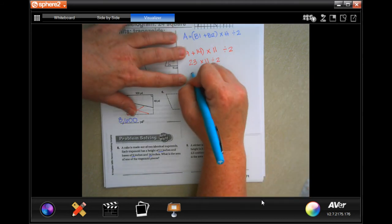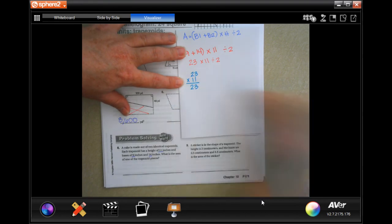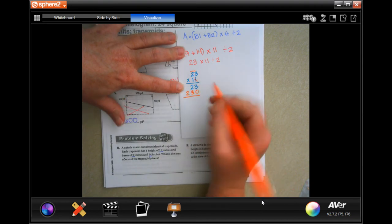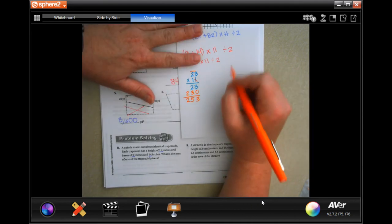Times 11 divided by 2. So 23 times 11, well, 1 times 23 is 23. We do tick, tack, and toe, and 1 times 23 is 23. So 3, 5, 2. So 253 divided by 2.